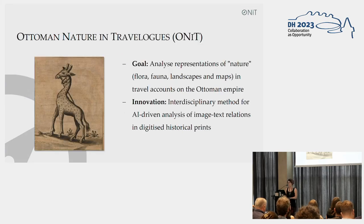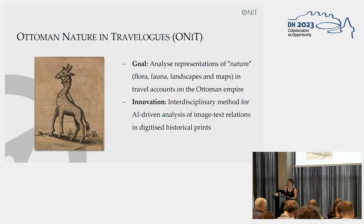These questions are highly relevant in the project called Ottoman Nature in Travelogues, or short, ONIT. The goal of our project is to analyze representations of nature in travel accounts on the Ottoman Empire. Concretely, we are looking for representations of flora, fauna, landscapes, and maps in both the images and the texts of these travel logs.